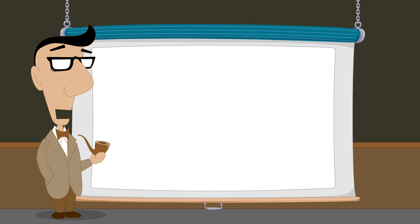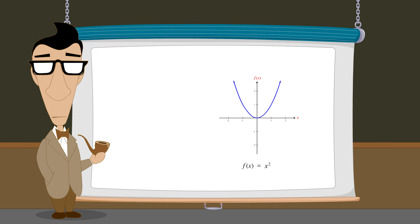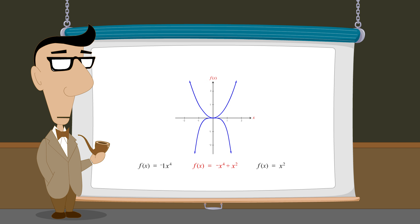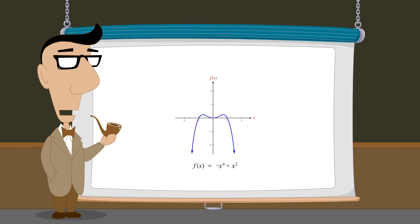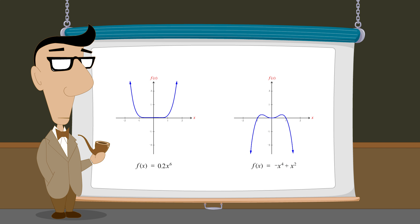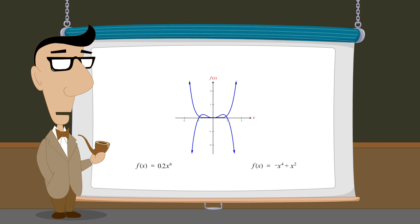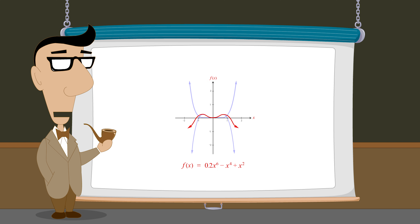So far, by combining the two monomial functions x-squared and negative one times x to the fourth power, we were able to make the graph reverse directions, first growing in the positive direction and then in the negative direction. We then added a third term, two-tenths times x to the sixth power, producing a graph that reverses direction twice: first heading in a positive direction, then reversing direction becoming negative, and then reversing direction again with its end behavior becoming infinitely positive.